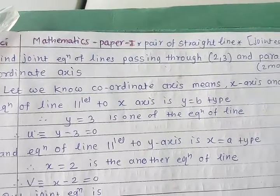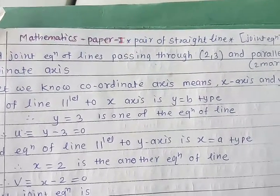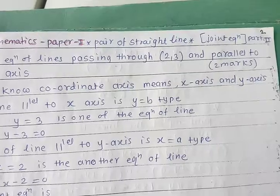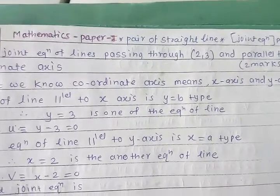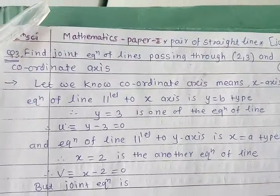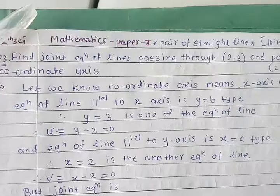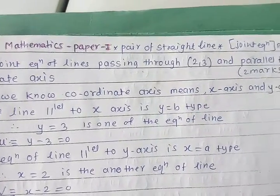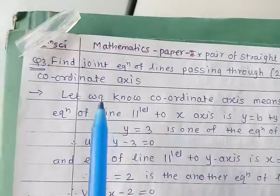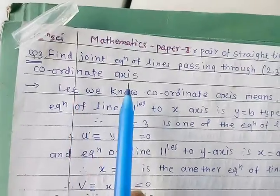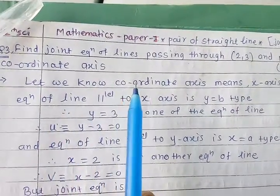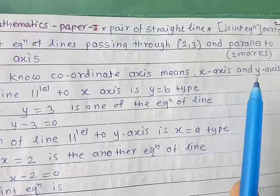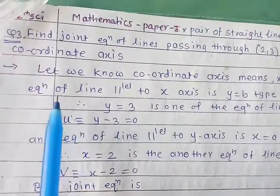Hi students, today we are going to see the joint equation of a different type. Find the joint equation of the lines passing through (2, 3) and parallel to the coordinate axes. Coordinate axes means the x-axis and y-axis.